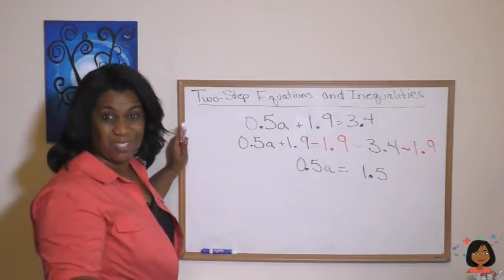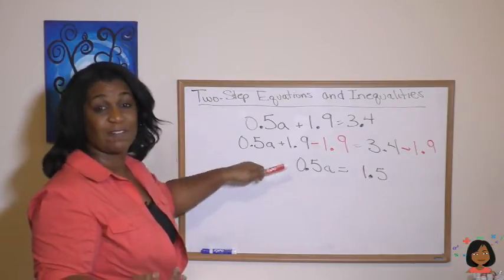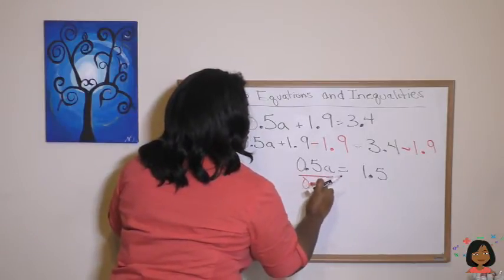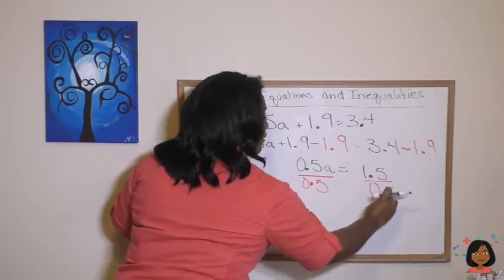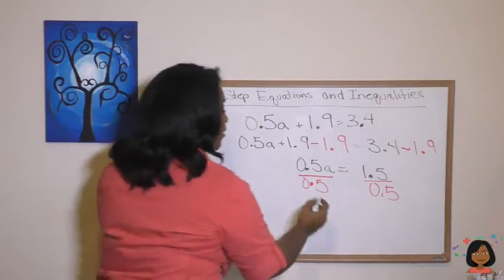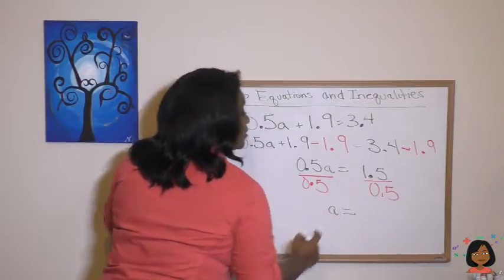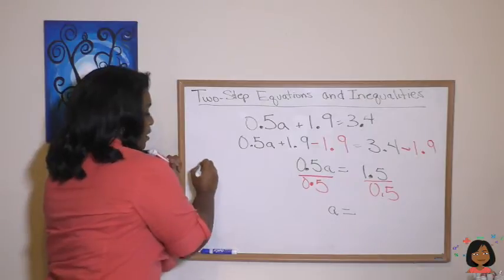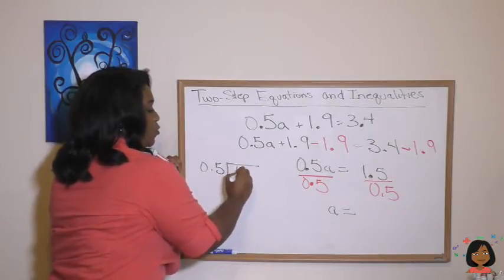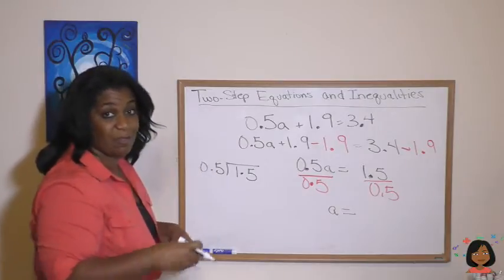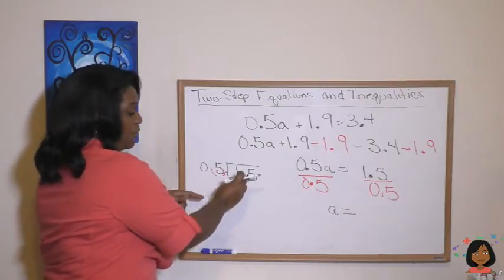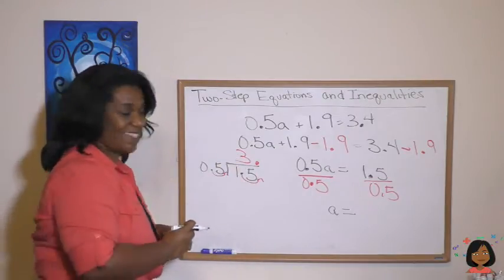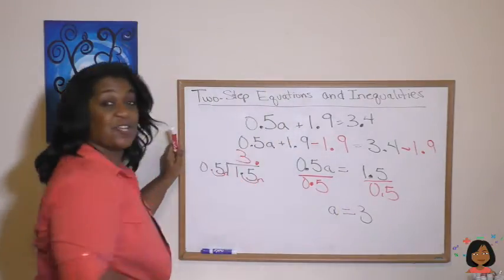Now that's part one. Part two, the second step is to get the a by itself. We have to divide both sides by 0.5. So let's do that. So here I do it. My red marker 0.5, on this side, 0.5 on this side. And what are we left with? A equals, now remember this is just a fraction, it's just a division problem. So let's do our division problem over to the side. 0.5 into 1.5. We have to move our decimal one place to the right on both numbers, which essentially means we're doing 5 into 15, which you know is a 3. So a equals 3 is your answer.